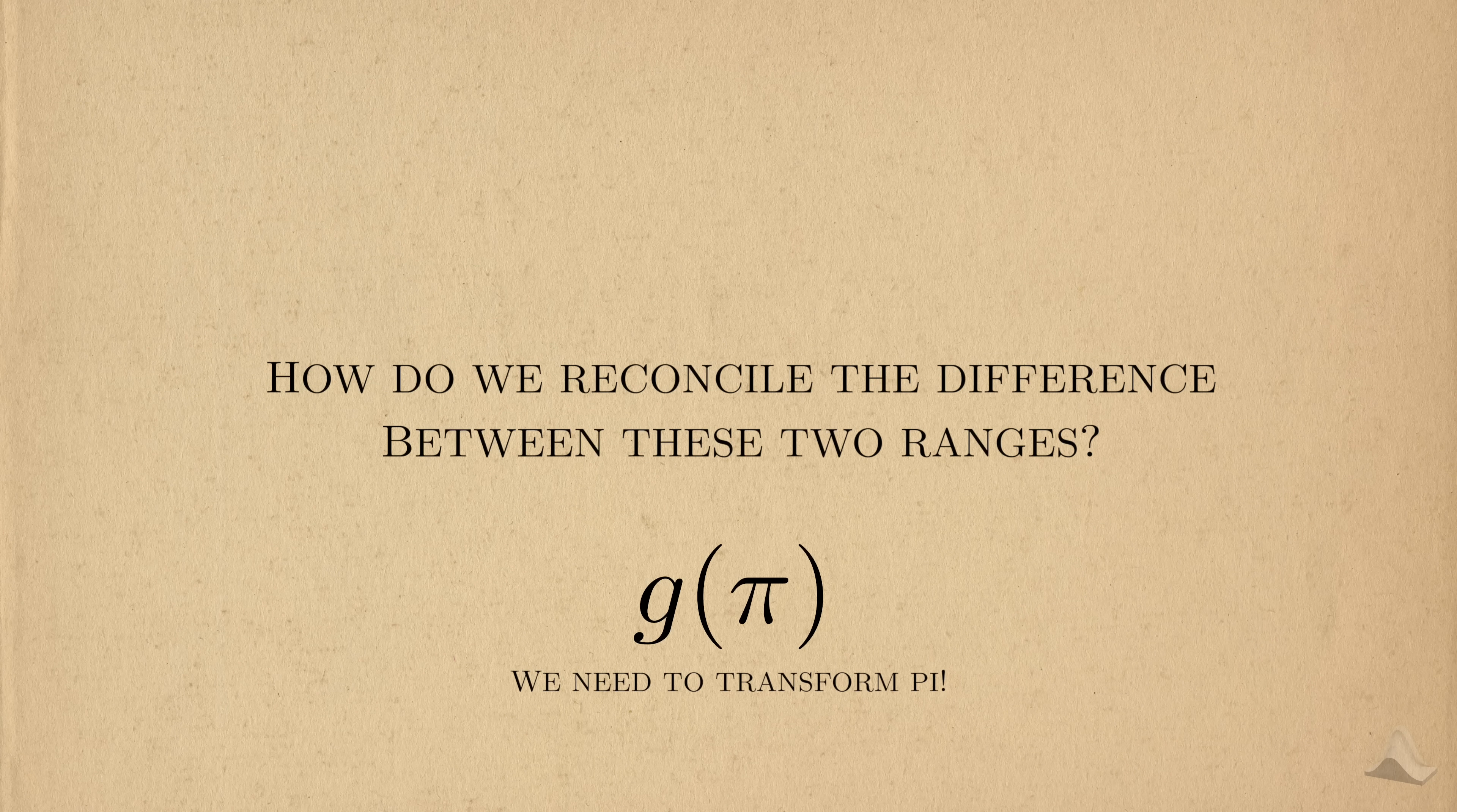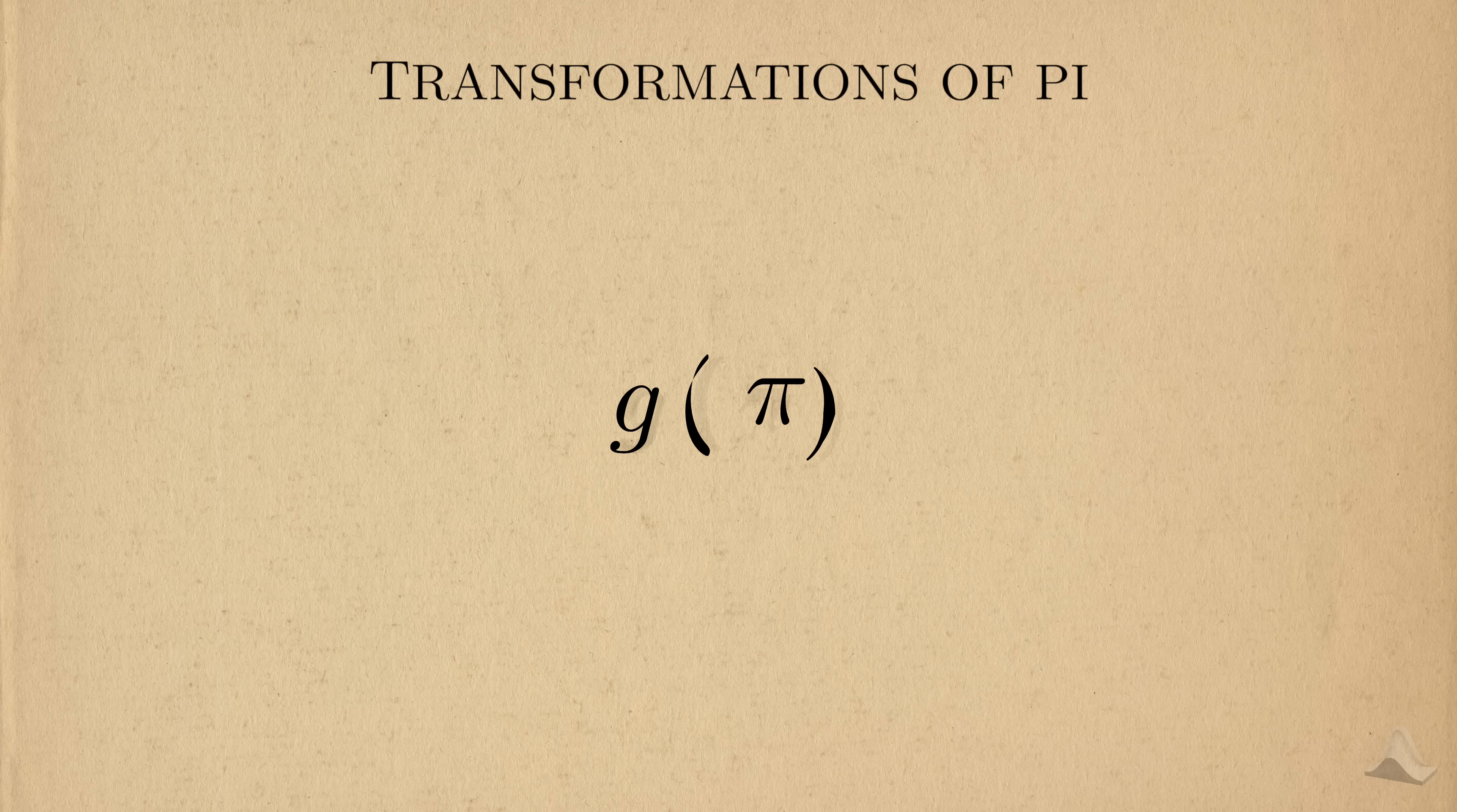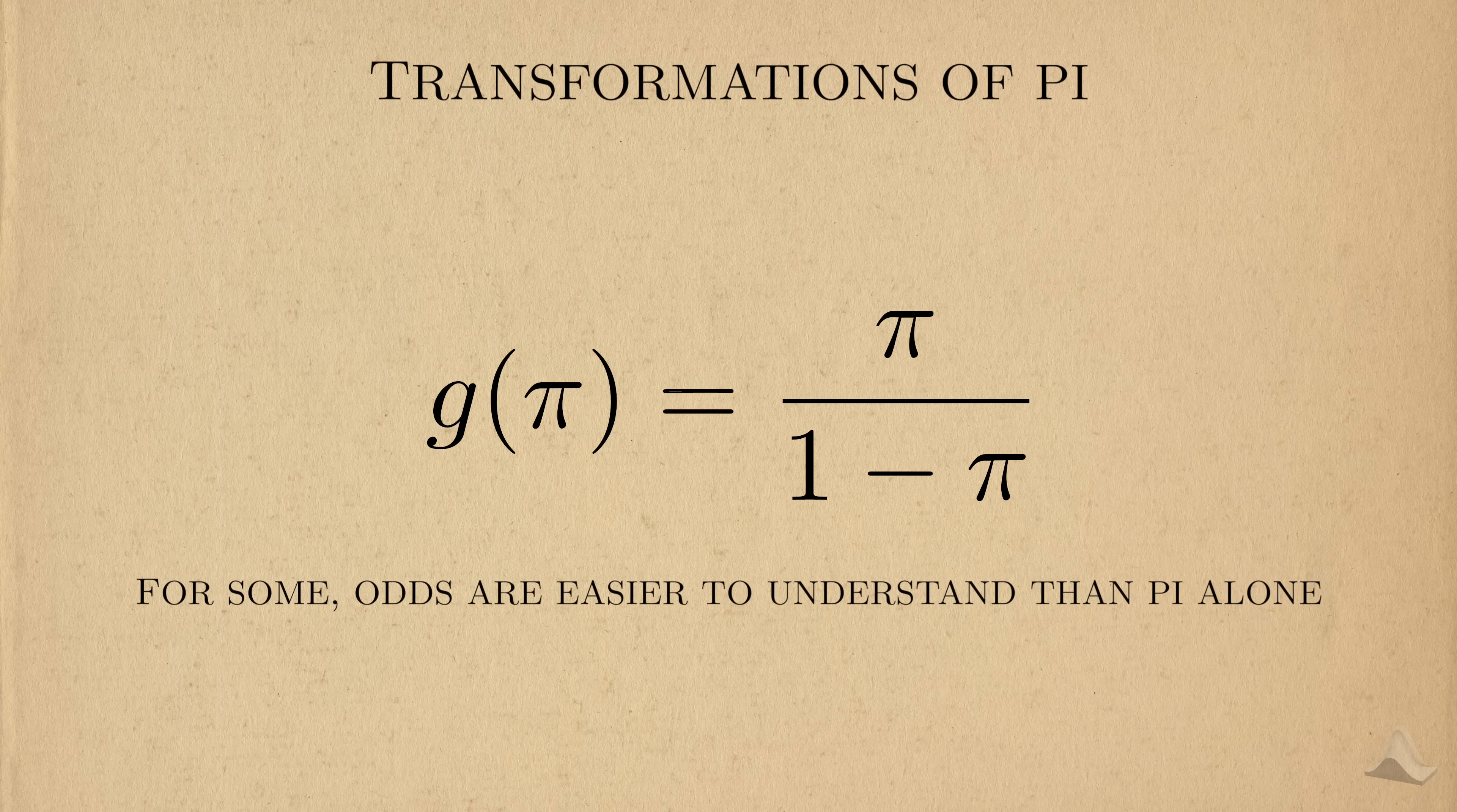The answer is to transform pi. By using a function of pi, we can change the range of values it can reach. One such transformation are odds. Odds are defined as the ratio of the probability an event will happen over the probability it won't happen. For some people, odds are easier to understand.